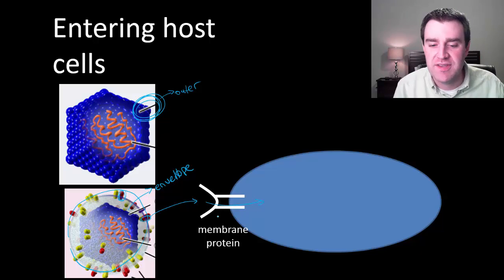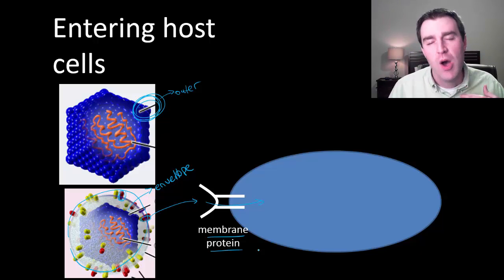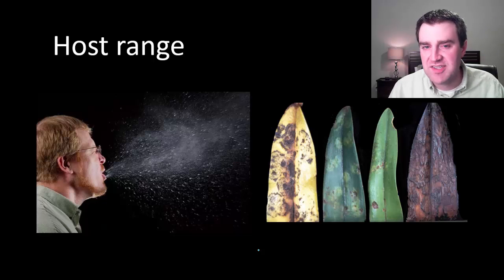Now that's really important, this idea that it can only break into a particular protein because that's going to limit viruses as to what kinds of cells they might be able to break into. Sometimes we call this idea a virus's host range. Maybe it can only break into cells that have the protein that it's capable of tricking.